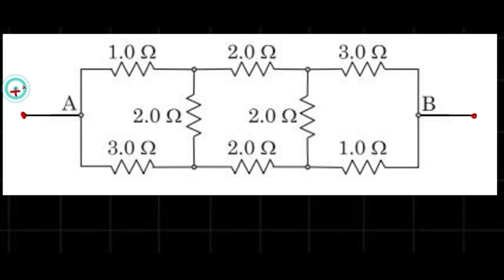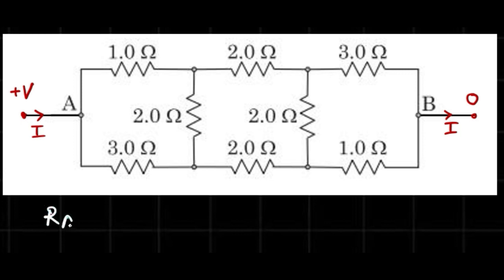The potential of A with respect to B is V, which is the EMF of the battery. So the potential here is +V and here it is zero. A current I flows from A into the circuit and leaves from B. So if we connect a battery V between terminals A and B and current I flows from A to B, the equivalent resistance R_AB can be written as R_AB = V/I.